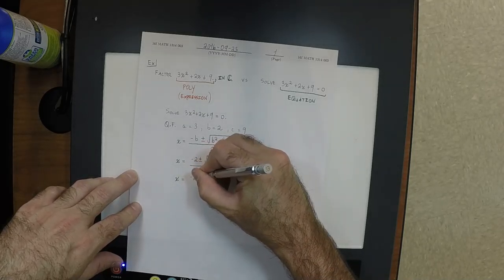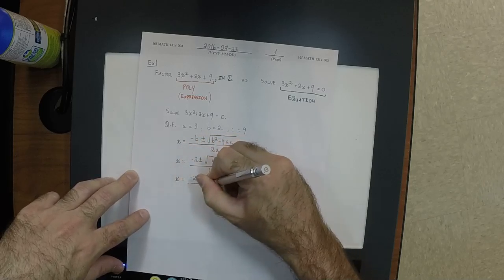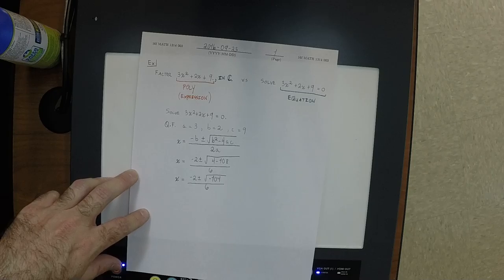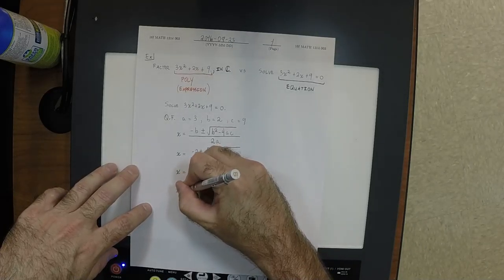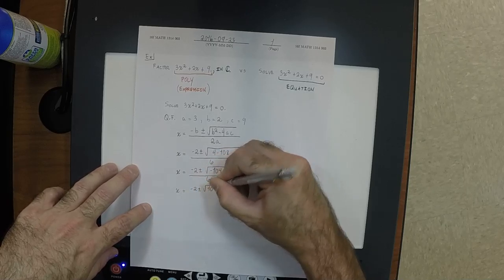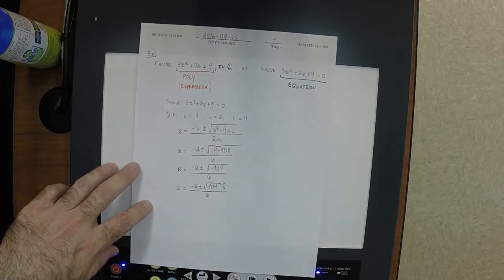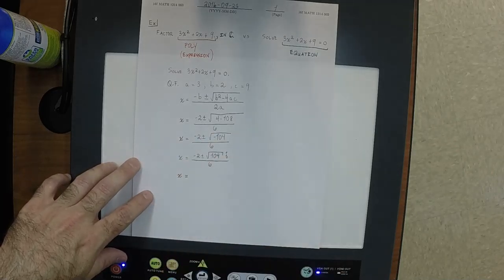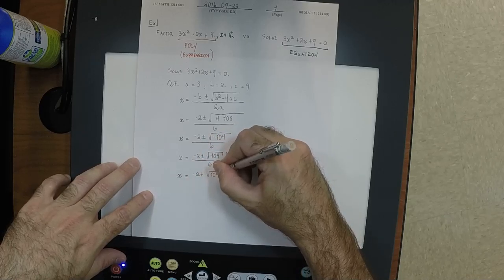So negative 2 plus or minus square root of negative 104, over 6. How do we get past the negative in the square root? It comes out of the square root as i. So that'd be negative 2 plus or minus square root of 104 times i, divided by 6. That means there are two solutions: negative 2 plus √104·i over 6, and negative 2 minus √104·i over 6.